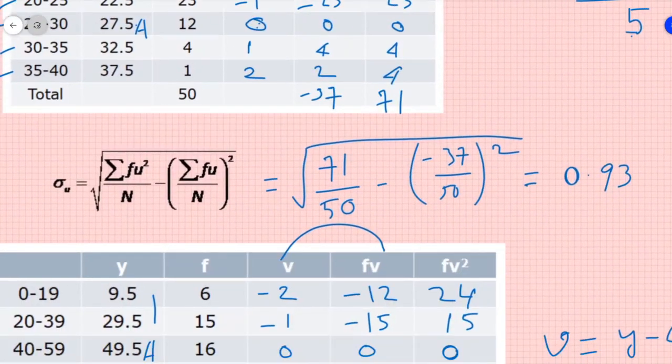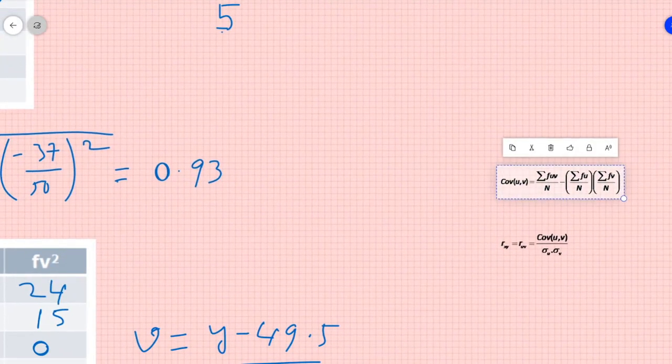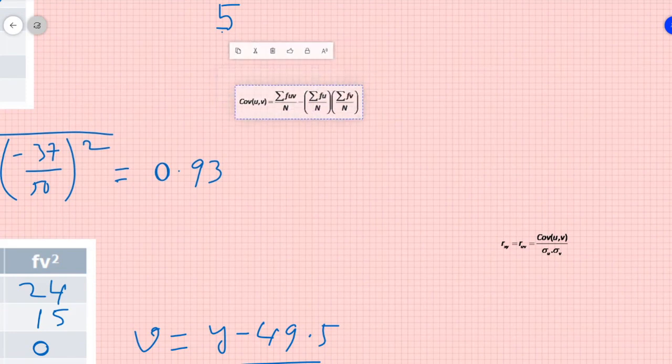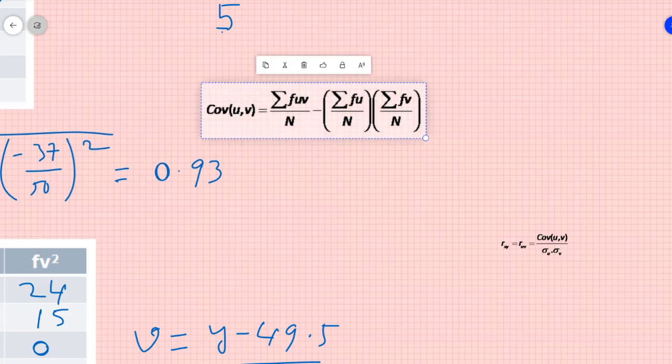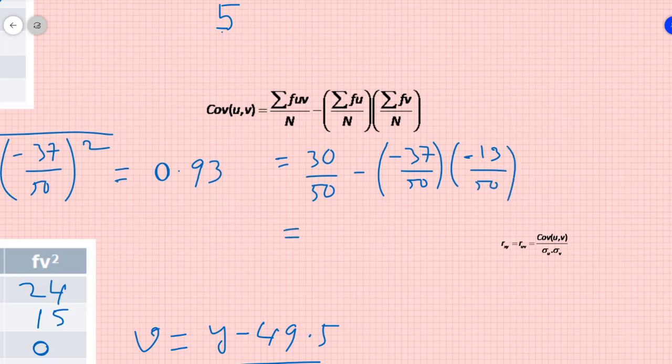Now you may ask where we would be using it. You would be using it to calculate covariance. Covariance of u and v, this equals summation fuv, the value was 30 by 50 minus summation fu was minus 37 by 50 into summation fv was minus 13 by 50. If we will solve this, we will get 0.4076. Fine, good.